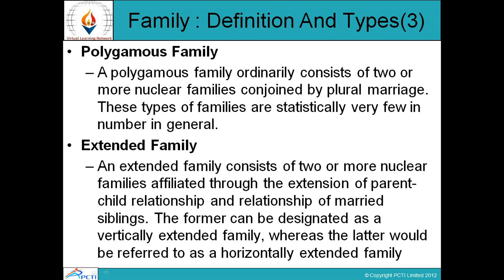The second type is the Extended Family. An extended family consists of two or more nuclear families affiliated through the extension of parent-child relationships and relationships of married siblings. The former can be designated as a vertically extended family whereas the latter would be referred to as a horizontally extended family. In a typical patriarchal extended family, there lives an elderly person with his son and wife and their unmarried children. The jointness in the joint family is depicted in a number of factors: commensality (eating together from the same kitchen), common residence, joint ownership of property, cooperation, common sentiments, common ritual bonds, etc.